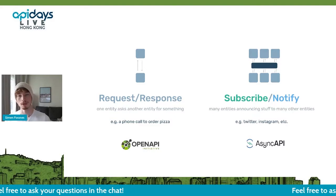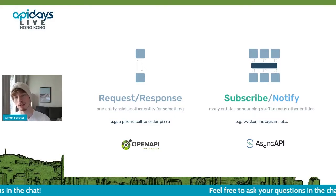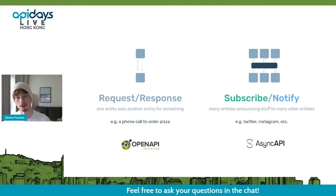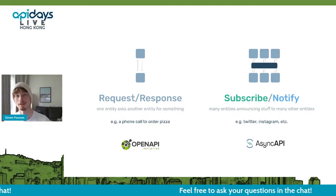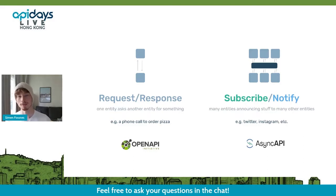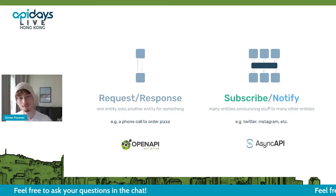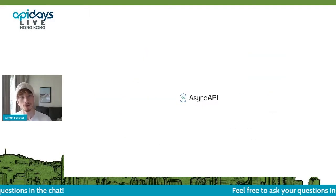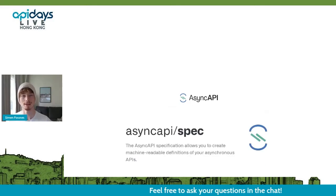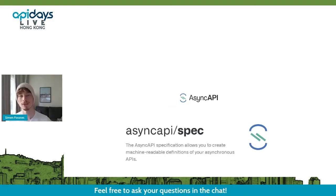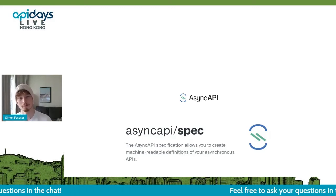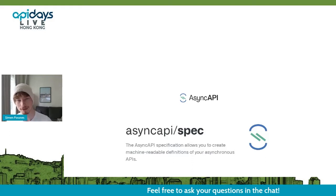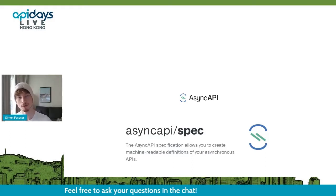Also recently, open API and Async API have both joined the same organization — the Linux Foundation. So if you're hesitant about the project itself, that is really good proof that things are going in the right direction for Async API, which is kind of the new kid on the block. So what is Async API quickly described? It's a specification that allows you to create machine readable definitions for your asynchronous APIs. You can call it asynchronous, event driven, message oriented — whatever — it's for those kinds of APIs.